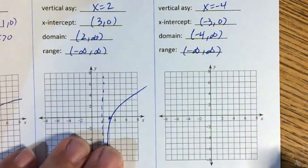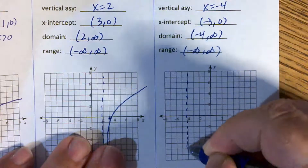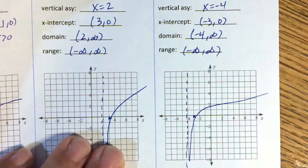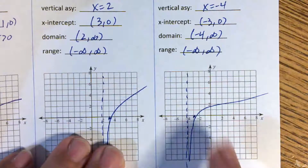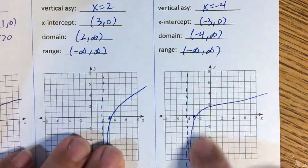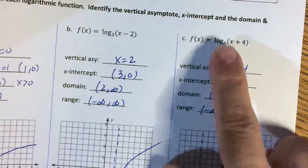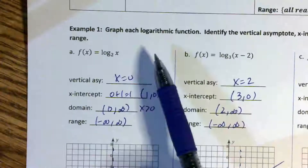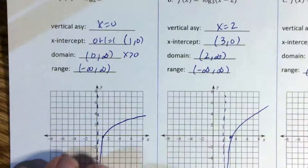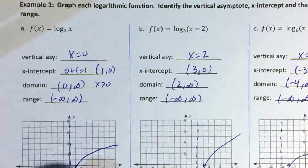We have a vertical asymptote at x equals negative 4 and an x-intercept at negative 3, and we're just going to go up like that. The most important feature of this graph is the vertical asymptote, and you need to get used to the basic shape of a logarithm — that's the basic shape. Notice all of these have different bases, but I graph them the same way. The basic shape looks the same no matter what the base is.